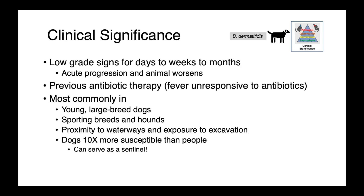A key historical clue for fungal infection is previous antibiotic therapy with fevers unresponsive to antibiotics — remember, antibiotics will not treat these eukaryotic organisms. Blastomyces dermatitidis is seen most commonly in young, large-breed dogs, particularly sporting breeds and hounds that are sniffing around in dirt and waterways or potentially exposed to excavation sites. This is also an infection people can get, and dogs are thought to be approximately 10 times more susceptible than people, so canine infections can serve as a sentinel for potential human exposure in the environment.